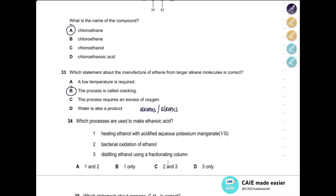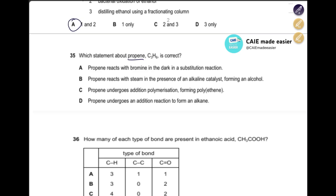Which processes are used to make ethanoic acid? First: heating ethanol with acidified potassium manganate — this is an oxidizing agent, so ethanol oxidizes to ethanoic acid. Yes, that works. Second: bacterial oxidation of ethanol — ethanol oxidizes to ethanoic acid. Yes. Third: distilling ethanol using a fractionating column — no, that's fractional distillation and only separates ethanol from other liquids. The answer is A.